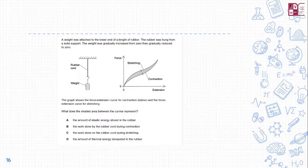Question 5: A weight is attached to the lower end of a rubber band hung from a solid support. The weight is gradually increased then decreased. The graph shows the force-extension curve for both stretching and contraction. What does the shaded area between the curves represent? It represents the amount of elastic energy stored in the rubber.